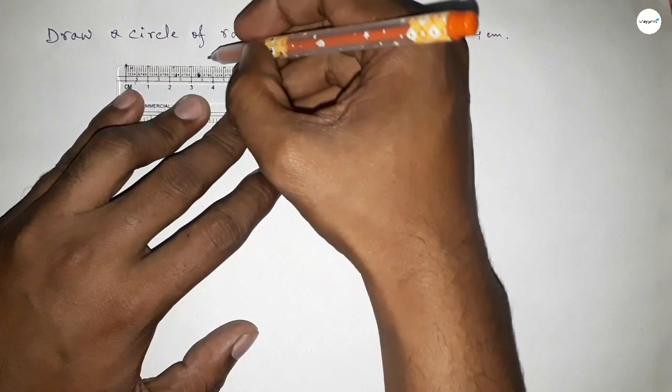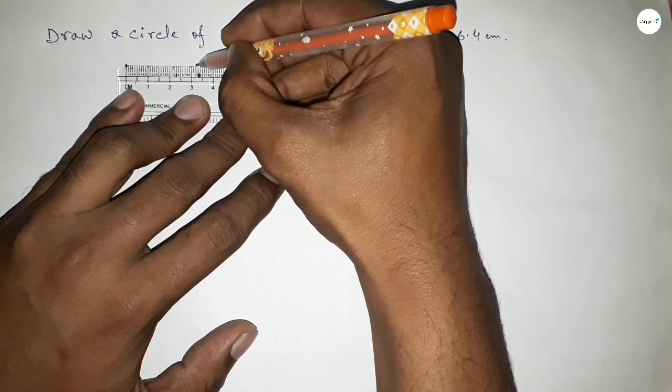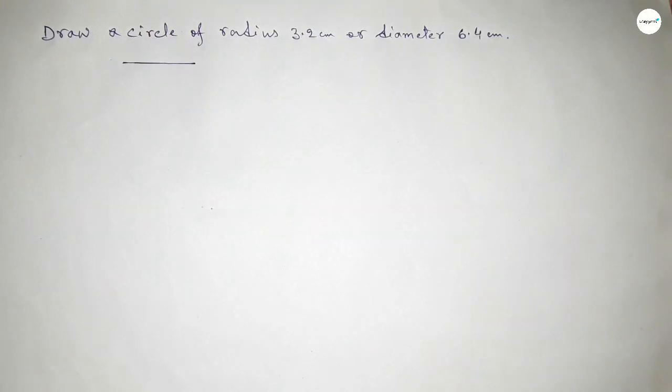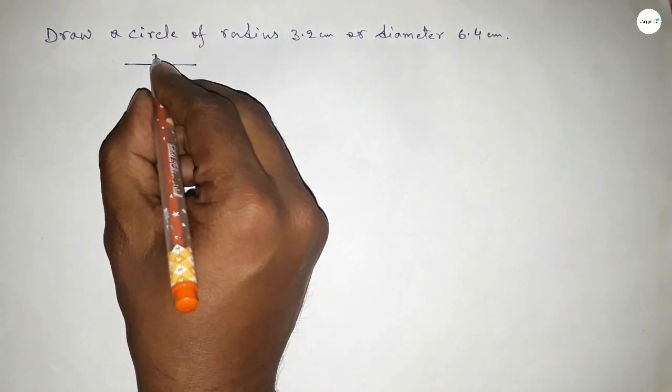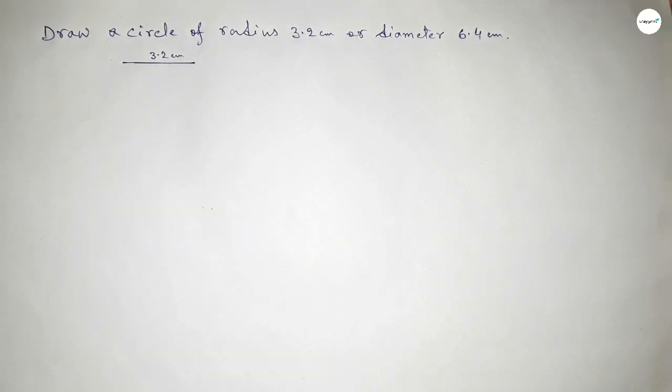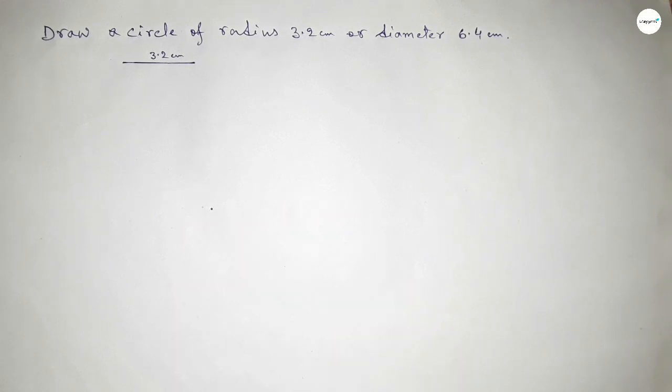This is 0, 1, 2, 3, and this is 3.2 centimeters. We know that the radius of a circle is half of the diameter. So this is 3.2 centimeters, and we're taking a point here.